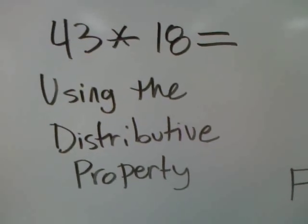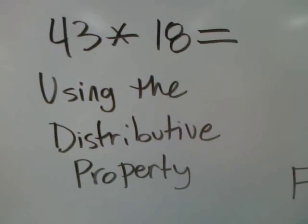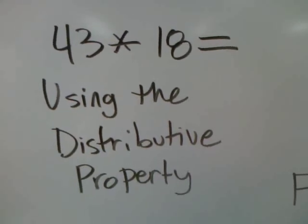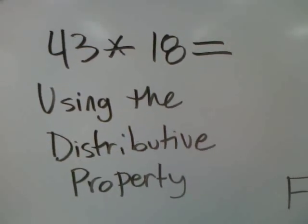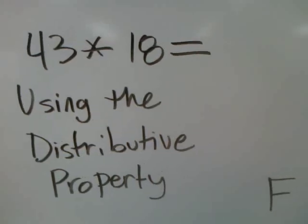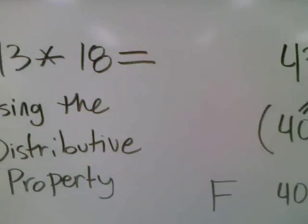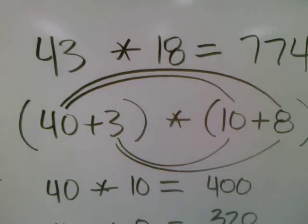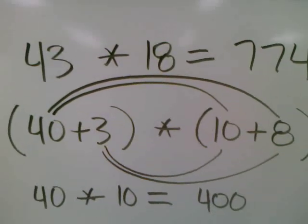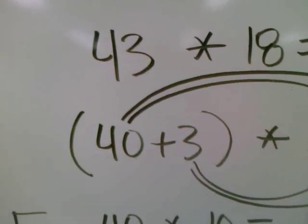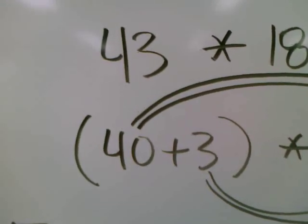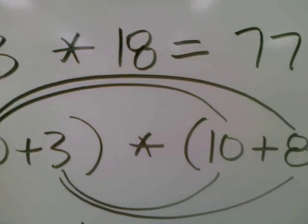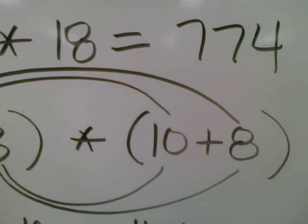Here's an example of multiplying using the distributive property. If you want to multiply 43 times 18, the first step is to separate the factors into easier numbers to multiply. For example, 43 can be separated into 40 plus 3, and 18 can be separated into 10 plus 8.